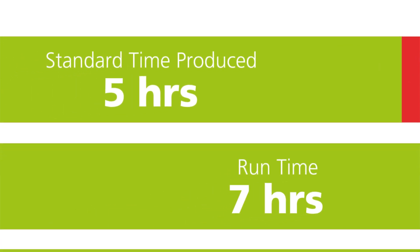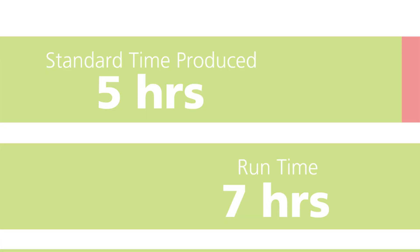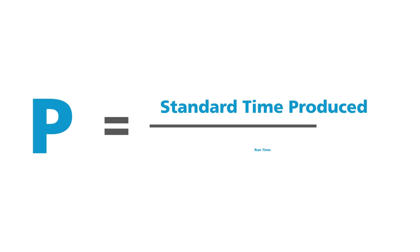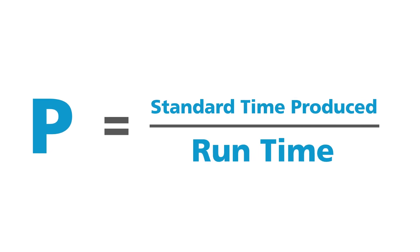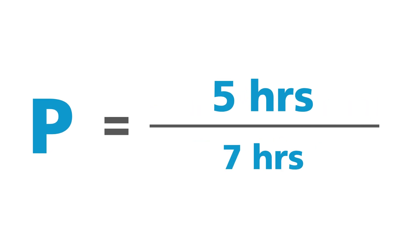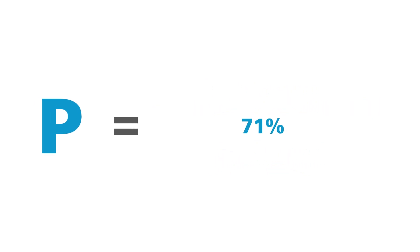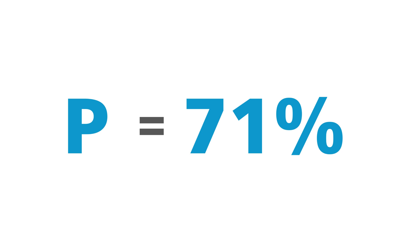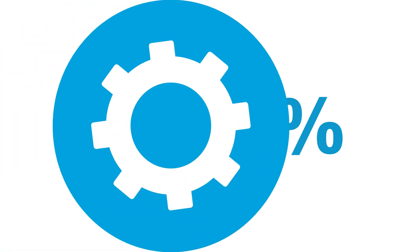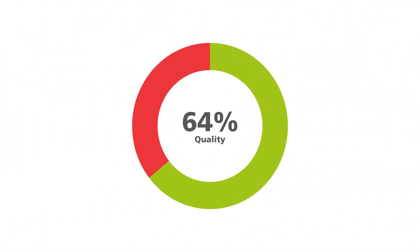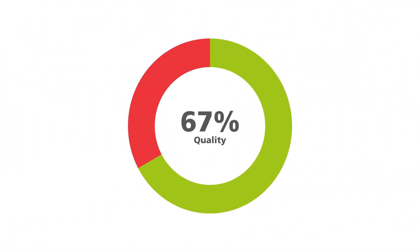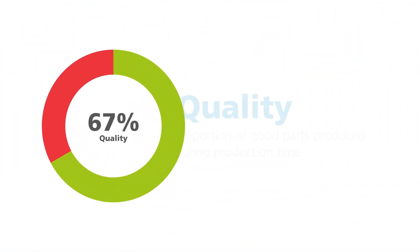The ratio of our standard time produced to runtime gives us our performance. Across our shift, our machine's performance was 71%.